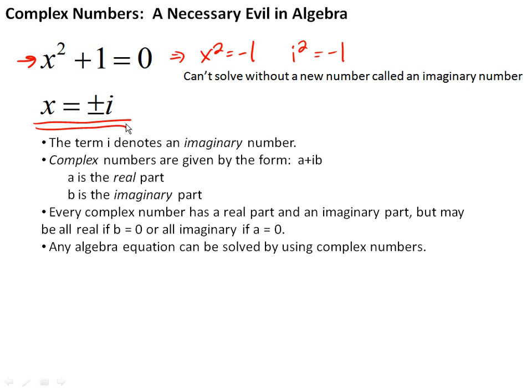Anytime you see an i in front of a number, it's an imaginary number. But mostly we deal with complex numbers, given by this form: a plus ib, where a is the real part and b is the imaginary part. Every complex number has a real and imaginary part, but a can be 0, making it purely imaginary, or if b is 0, it's purely real. This one invention means we can solve pretty much any algebra equation. So overall, it's a worthwhile tradeoff.